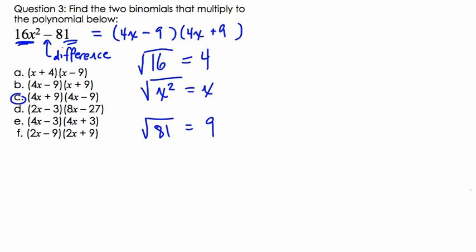Now why does this happen? Well, the way I look at this, you can prove it algebraically, but I want to show it in terms of an area model. So I'll show it right here. So suppose we know that we have an area of 16x squared minus 81. What would the side lengths be that give us this area?